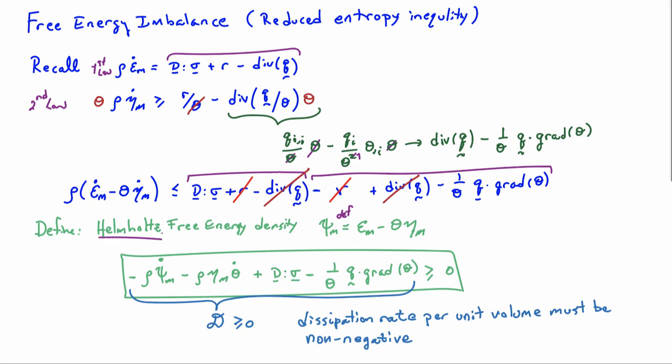The term on the left hand side here is often denoted by the letter script D. And so we end up with D must be greater or equal to 0. And D is called the dissipation rate per unit volume. And it must be non-negative to satisfy our laws of thermodynamics. The combined law of the first and the second law of thermodynamics.